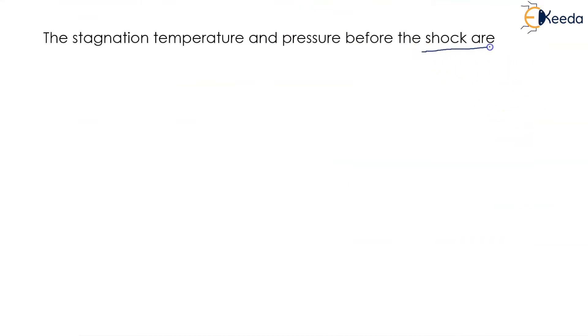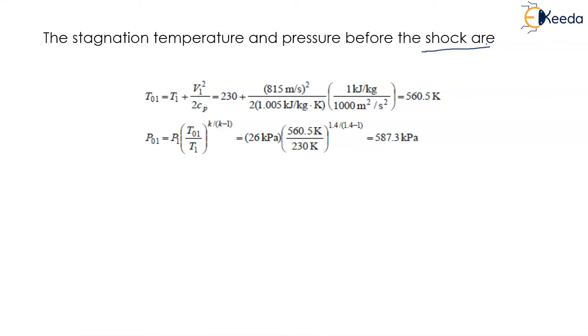The stagnation temperature before the shock is T01 = T1 + V1²/(2Cp), that is 230 + 815² divided by 2 times 1.005 kJ per kg Kelvin, which equals 560.5 Kelvin.